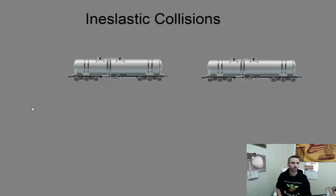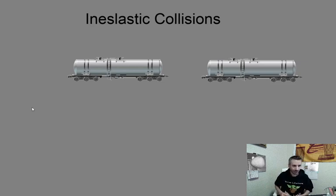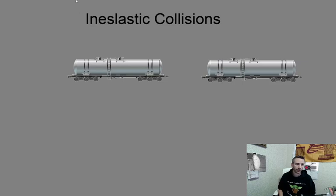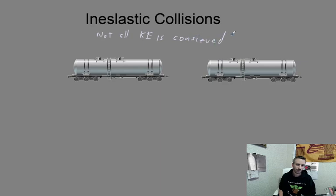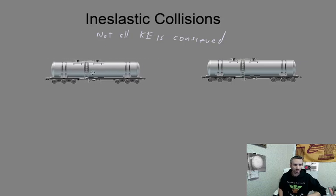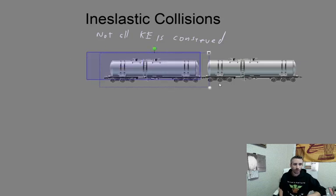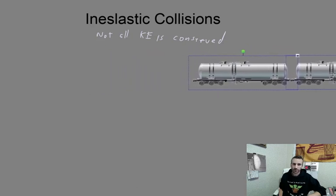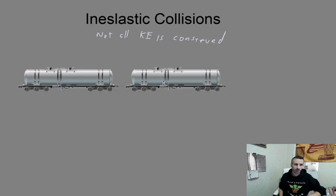Let's move on to inelastic collisions, which is why I have to enunciate so carefully. In elastic collisions, kinetic energy is conserved. But in inelastic collisions, kinetic energy is not necessarily conserved — or more precisely, not all kinetic energy is conserved. At least some of it is lost to heat. So in this example, you have two train cars: one comes in, it hits, they couple, and then they move on together with one speed. Kinetic energy is not conserved in this case.